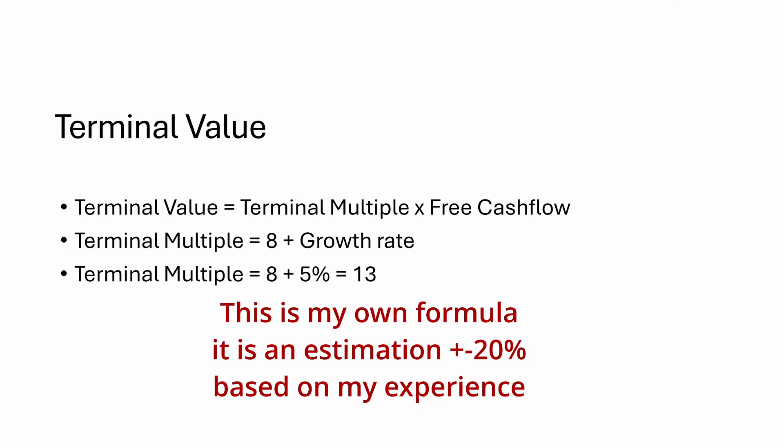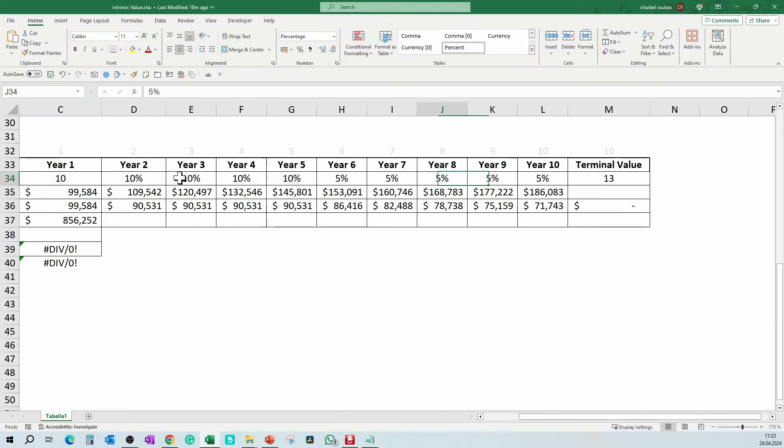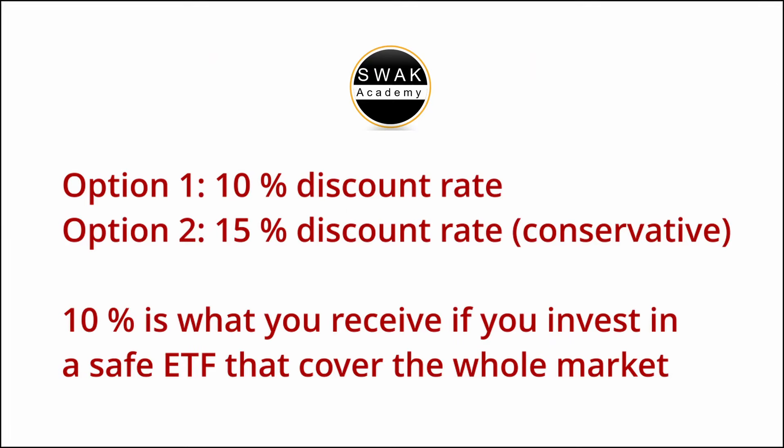For the terminal value, you can apply the following formula to find the terminal multiple at which the company will be sold in 10 years: terminal value equals terminal multiple multiplied by free cash flow. For the terminal multiple, from my experience, you can use the formula: 8 plus the growth rate for the last year. In this example, we calculated 5% growth rate after 10 years, so the terminal multiple is 8 plus 5, which equals 13. For the discount rate, you can consider 10%, or if you want to be even more conservative, 15% — the value that Warren Buffett uses in his calculations.